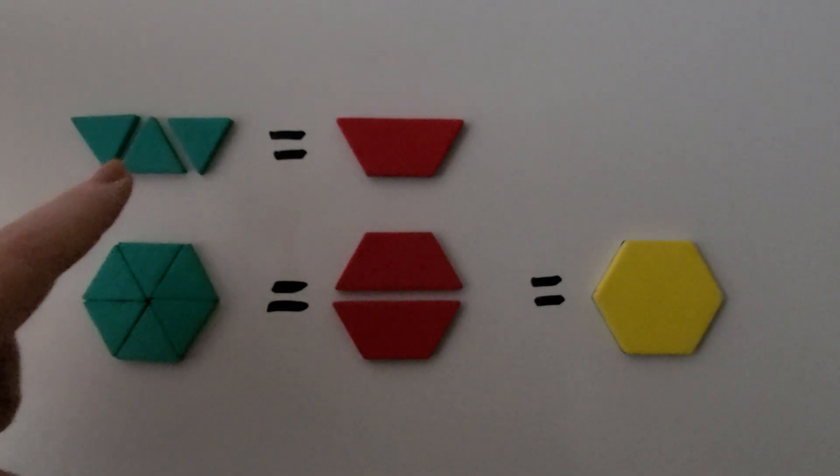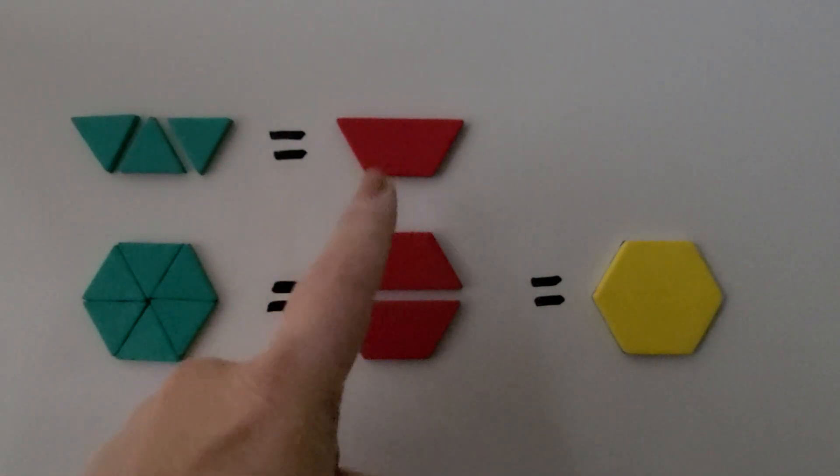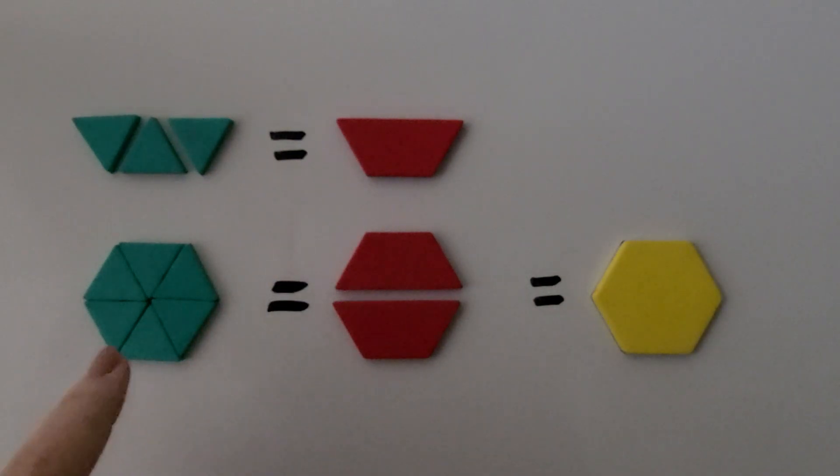We put three triangles together to make this red shape. This is called a trapezoid. If we put six triangles together, we can make two trapezoids.